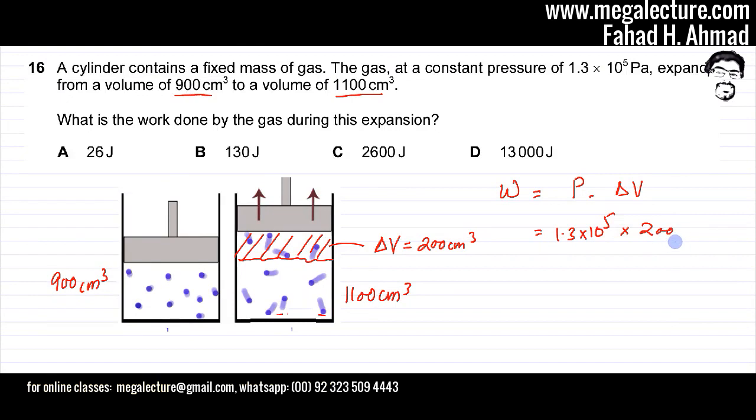but that should be in cubic meters. Remember, to convert cm³ to m³, you multiply by 10⁻⁶. So it's 200 × 10⁻⁶ meters cubed.